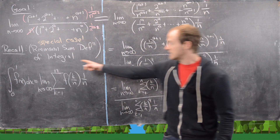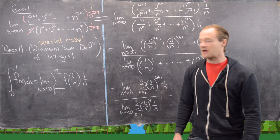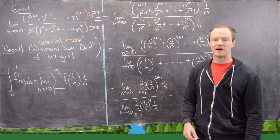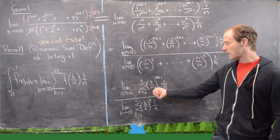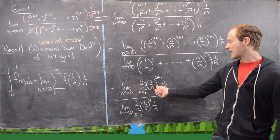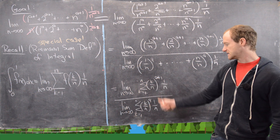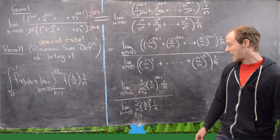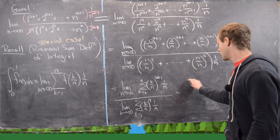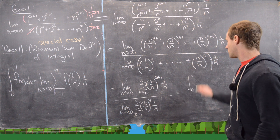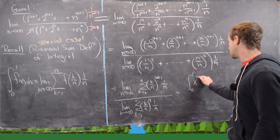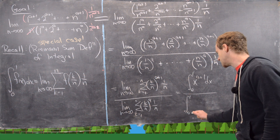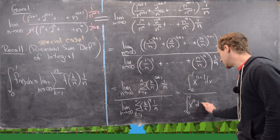Notice each of these matches the special case of the Riemann sum definition. In the numerator the function is f(x) = x^(a+1), and in the denominator the function is f(x) = x^a. So the numerator equals the integral from 0 to 1 of x^(a+1) dx, and the denominator equals the integral from 0 to 1 of x^a dx.